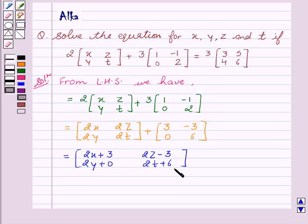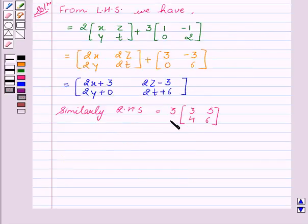Now we will solve RHS equal to 3 into matrix [3, 5, 4, 6]. This is equal to [9, 15, 12, 18].